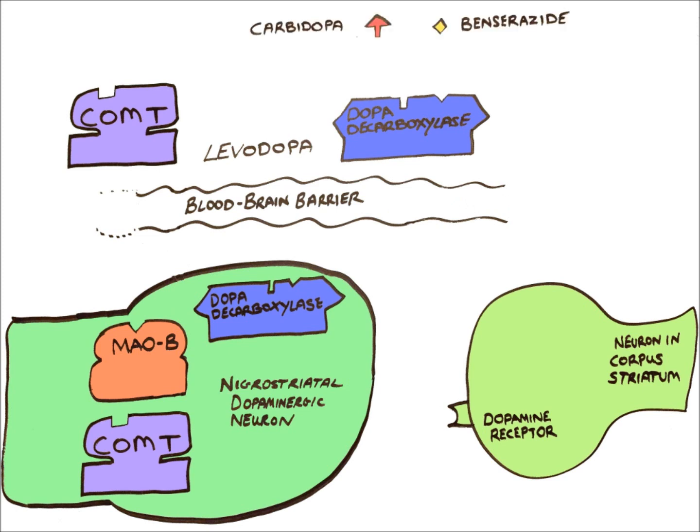Carbidopa and benserazide are dopa-decarboxylase inhibitors. They block the actions of peripheral dopa-decarboxylase, stopping it from breaking down levodopa into dopamine. This reduces the side effects of levodopa treatment, as well as making more levodopa available to cross the blood-brain barrier.